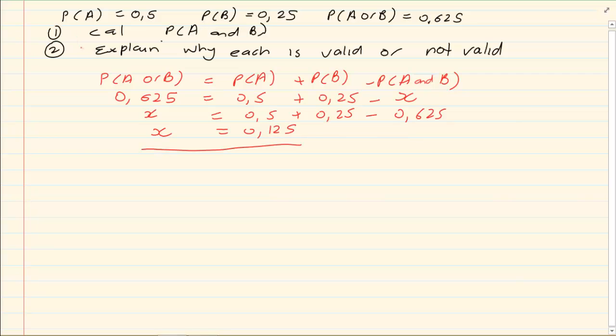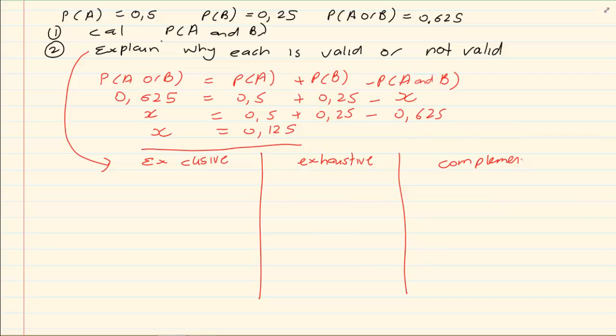Right, now when they say explain why each is valid, I am talking of is it exclusive? Is it exhaustive? Is it complementary? Now you must explain why each of them are valid or not valid. Now, exclusive says that P of A and B must be equal to 0. Therefore, this event is not exclusive. Is it exhaustive? For it to be exhaustive, P of A or B must equal to 1. But in this case, P of A or B is equal to 0.625. Therefore, it is not exhaustive.